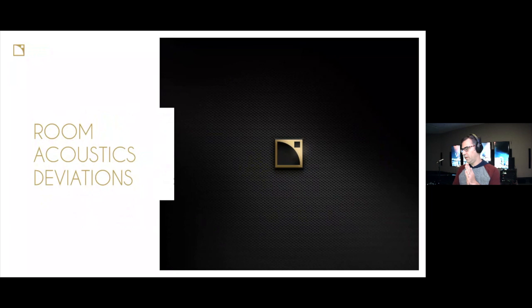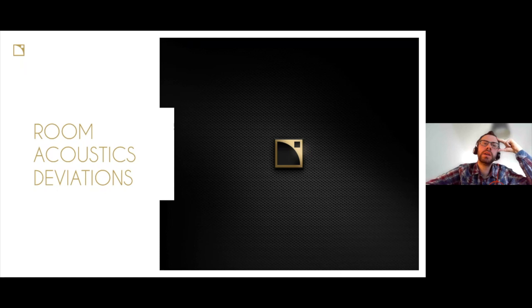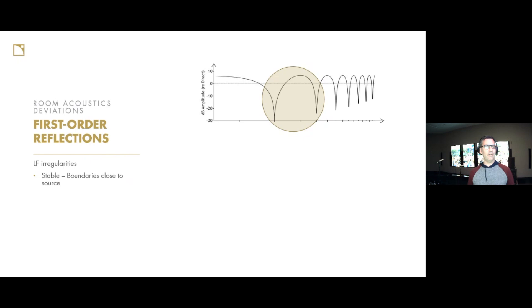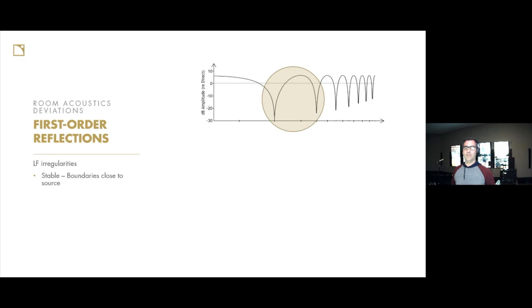Let's talk about what can affect measurement in the low frequency and mid frequency. The high frequency is basically to be dealt with in simulation, but in the low-mid and the low, we need to take into account room acoustics — these are harder to simulate for many reasons, but fairly easy to measure. The first thing to think about is the different types of irregularities and reflections that we can experience and how they affect frequency response.